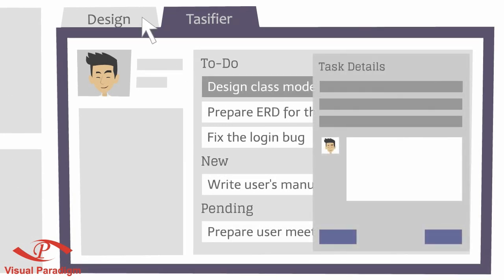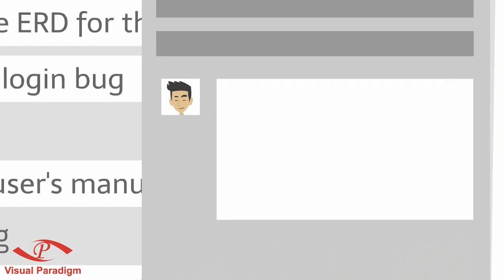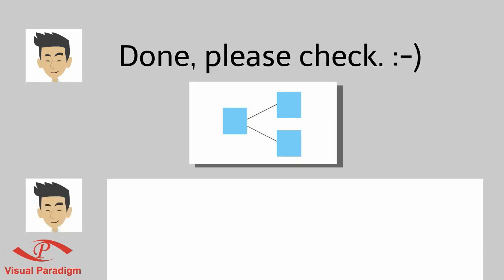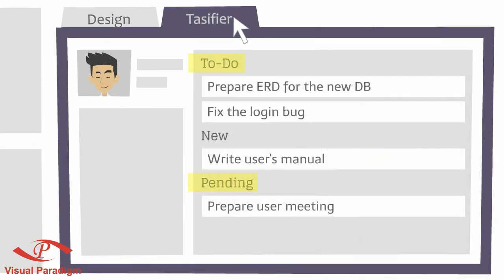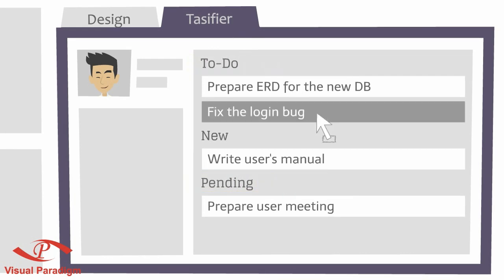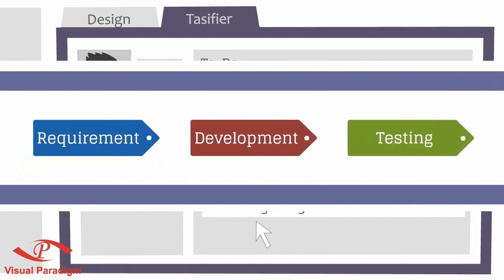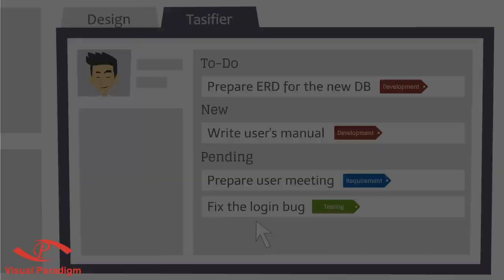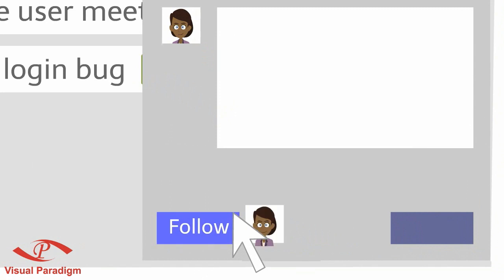And start working. They can prioritize their tasks based on their own schedule and workload. Tags can be added to tasks for grouping and searching. Team members can keep track of progress of tasks by following them.